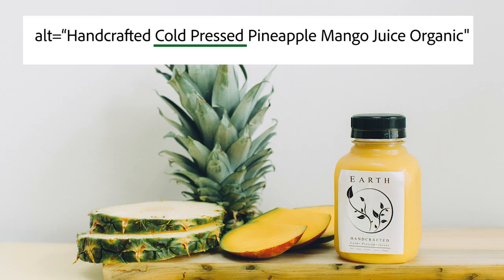This might be something that someone is searching for in the Google search bar. It's really important to put as much detail as possible while keeping it simple. This is an example of not keyword stuffing — the keyword I'm targeting is 'cold pressed' and I've only used it once. I didn't repeat it over and over again. Just include your keyword once, and you can use a secondary keyword that describes it in even more detail.